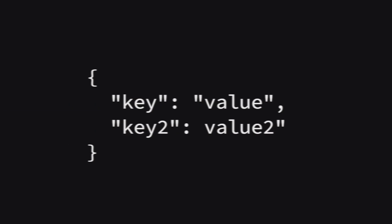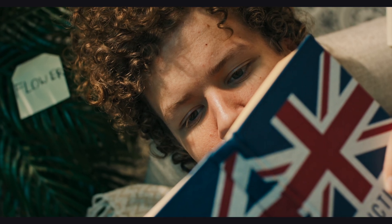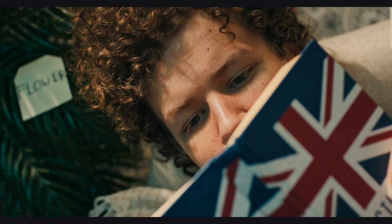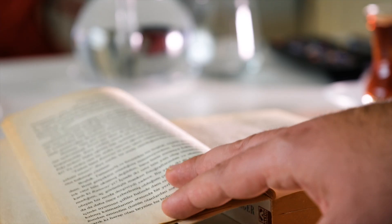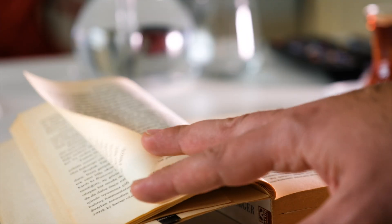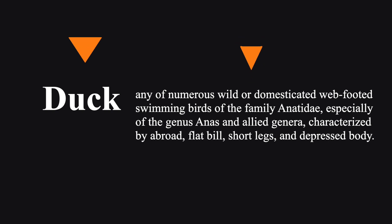First let's go through the structure a little bit more. We have something we call a key-value pair. Imagine you have a dictionary and you want to look up 'duck' — you would open the book, go to the letter D, and start looking for the word. Once you find it, you will see 'duck' to the left and a description of the word to the right. You can say the entire description is the value, and the word 'duck' is the key.